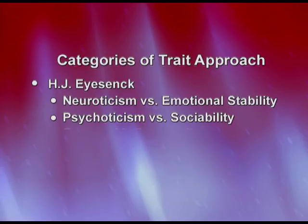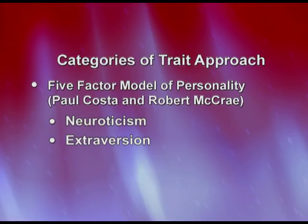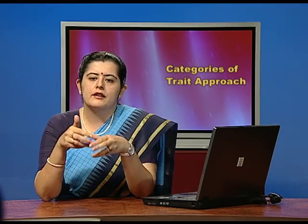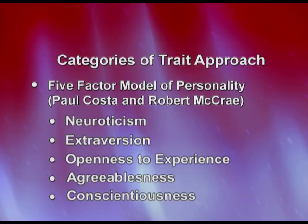The latest theory is the Five Factor Model, developed by Paul Costa and Robert McCrae. It has five factors — two common ones are neuroticism and extraversion. The other three are: openness to experience, where people like to explore and try new things; agreeableness, where people are very cooperative; and conscientiousness, where people have a very high sense of guilt and regret.